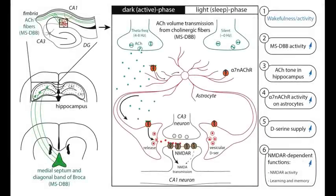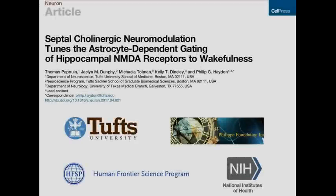Authors concluded that astrocytes gather information about the arousal of the animal by sensing neuromodulators such as acetylcholine, and use that information to supply the adequate gliotransmitter in the appropriate amount at the appropriate time. By doing so, astrocytes are able to accommodate or anticipate the needs of neurons and provide what the authors called contextual guidance to synapses.